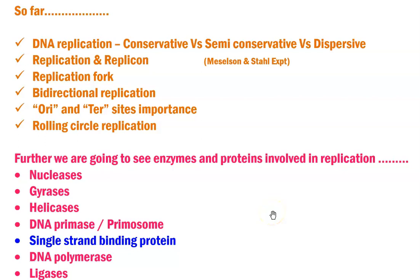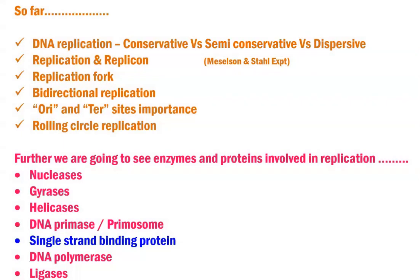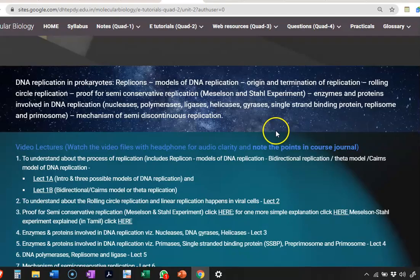So far in the previous lectures pertaining to unit 2, we have covered about DNA replication — the three models of DNA replication — and the accepted model in living organisms is the semi-conservative model, for which the Meselson-Stahl experiment is the conclusive proof.